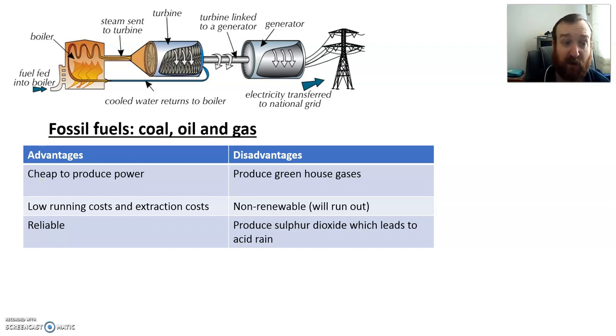And they work in a similar way to the biofuels, where we've got the fuels fed into a boiler. It transfers the chemical energy to heat that heats the water up. Water's turned to steam which drives a turbine, which is linked to a generator which transfers electricity to the national grid, goes into our homes, businesses, industry. So it works in a similar way, but it's cheap to produce.